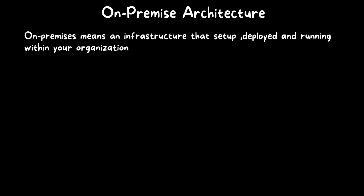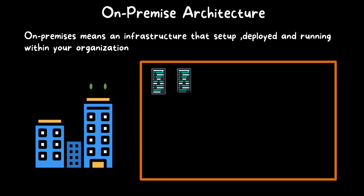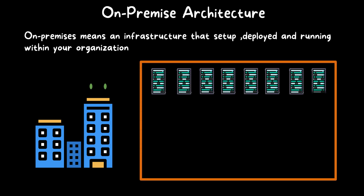What is on-premise architecture? On-premise means an infrastructure that is set up, deployed, and running within your organization. In this kind of setup, every IT resource shall be running from the local data center that is hosted inside the organization. For example, consider one organization that has a local data center containing multiple network and server racks, which are used to host all of the services that the organization requires, all locally hosted inside its local data center.